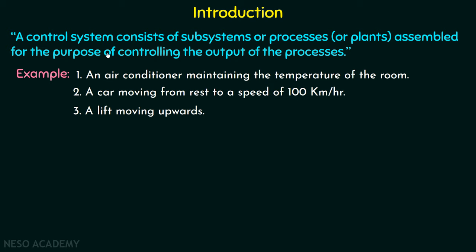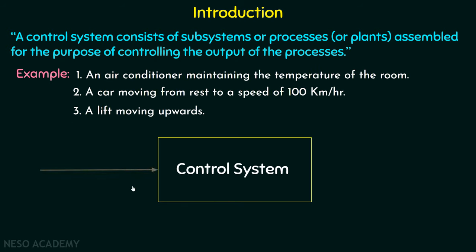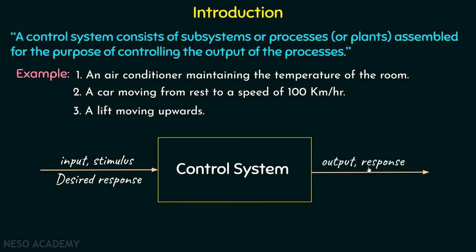Now let's understand this in a better manner with the help of a block diagram. On one side we have the input or stimulus — this is the desired response we want from the system. On the other side we have the output or response — this is the actual response we get after processing. Every time, the desired response is not the same as the actual response, and the difference between them is the error of the control system. As of now, we just need to know that any control system takes an input, processes it in a predefined manner, and generates an output.